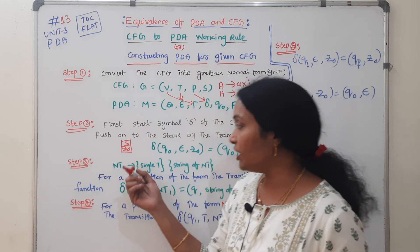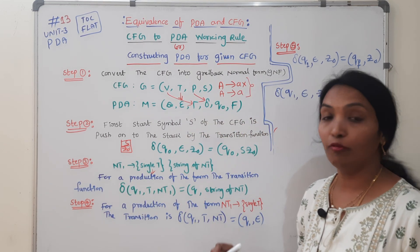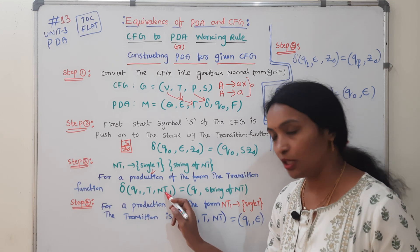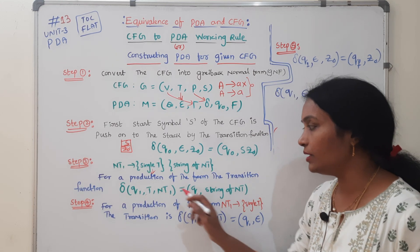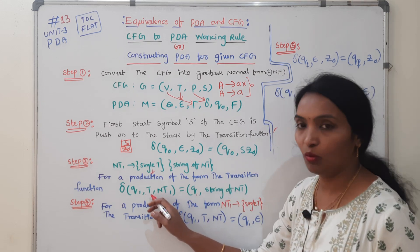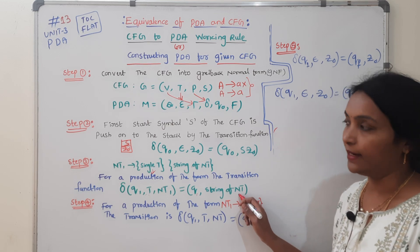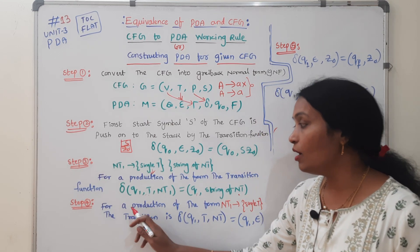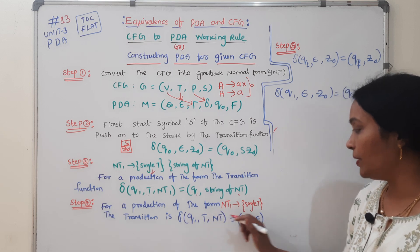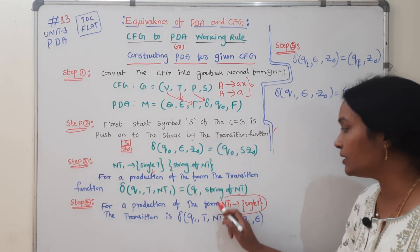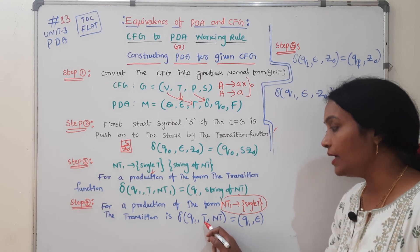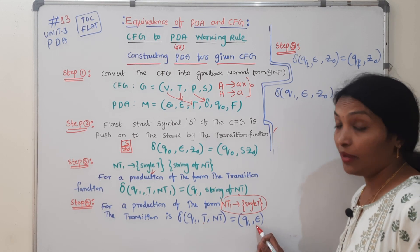The second rule: for a production of the form where a non-terminal maps to a string of non-terminals, the transition function goes from Q1 with a terminal and non-terminal — there is no change in state, it goes to Q1 — and converts strings of non-terminals. The third and fourth steps: for a production of the form where NT equals a single terminal, the transition function has no state change, uses Epsilon, pops the single terminal — this is a pop operation.